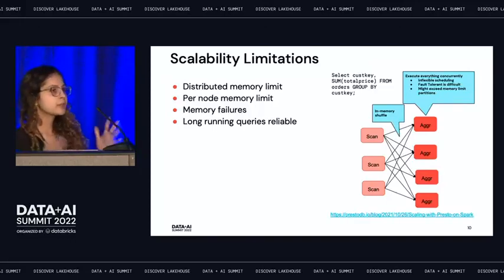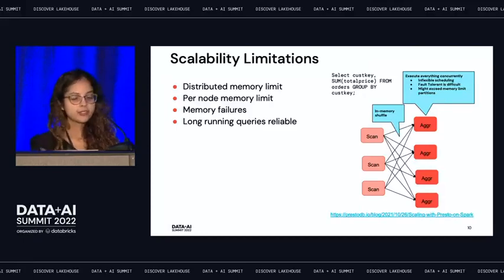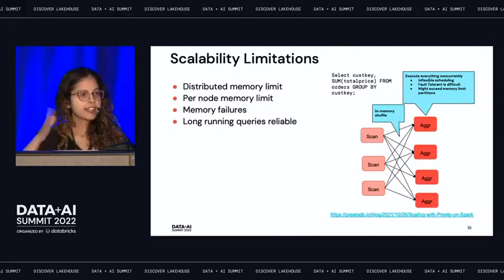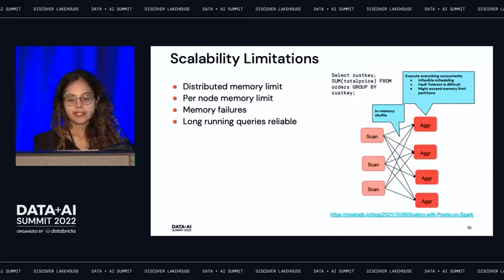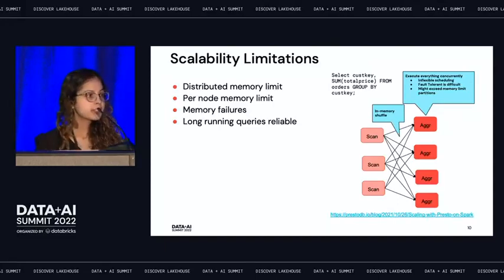Everything in Presto executes concurrently. For an aggregation on total price, it has to load all the data for that customer key into memory, causing inflexible scheduling. Presto does not offer fault tolerance — if any task fails in a later stage, your query fails. You can easily exceed memory limits. And because all queries share the same JVM, one bad query can negatively impact other queries or the entire cluster.